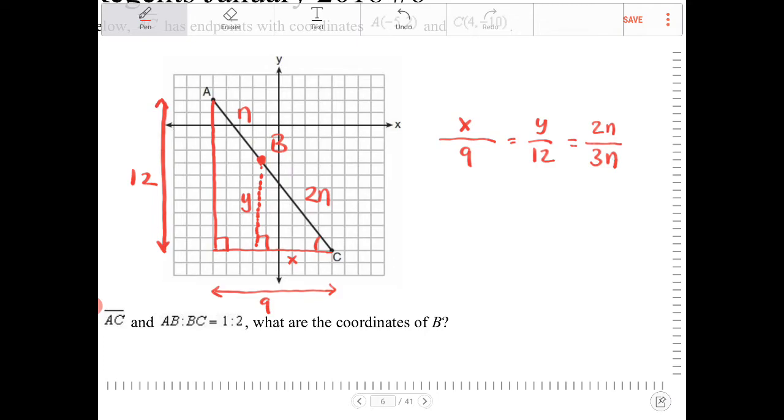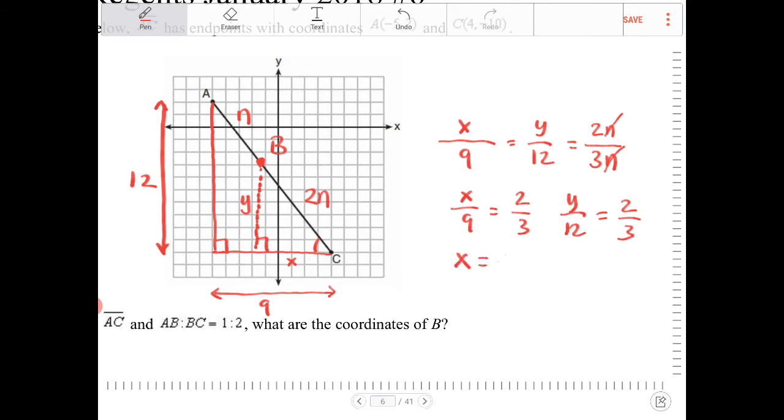Notice now the N's cancel. And what I have here is actually two different equations. I have X over 9 is equal to 2 thirds, and I have Y over 12 is equal to 2 thirds. I can solve for X now. I'm going to multiply both sides by 9, and I'll end up with 6. I'm going to solve for Y. I'm going to multiply both sides by 12, and I will end up with Y is equal to 8.